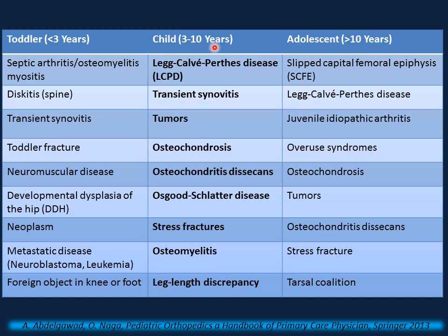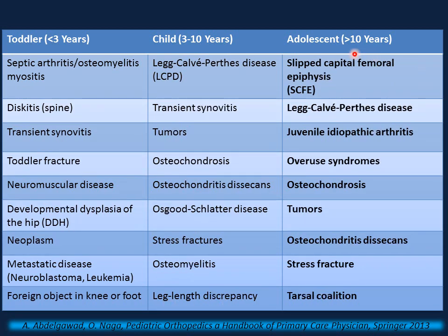In children between 3 and 10 years, possibilities include Perthes disease, transient synovitis, tumors, osteochondrosis, osteochondritis dissecans, Osgood-Schlatter disease, stress fractures, osteomyelitis, and leg length discrepancy. In adolescents over 10 years, possibilities include slipped capital femoral epiphysis, Perthes disease, juvenile idiopathic arthritis, overuse syndromes such as Sever's disease or Osgood-Schlatter disease, osteochondrosis, tumors, osteochondritis dissecans, stress fracture, and tarsal coalition or painful flat foot.